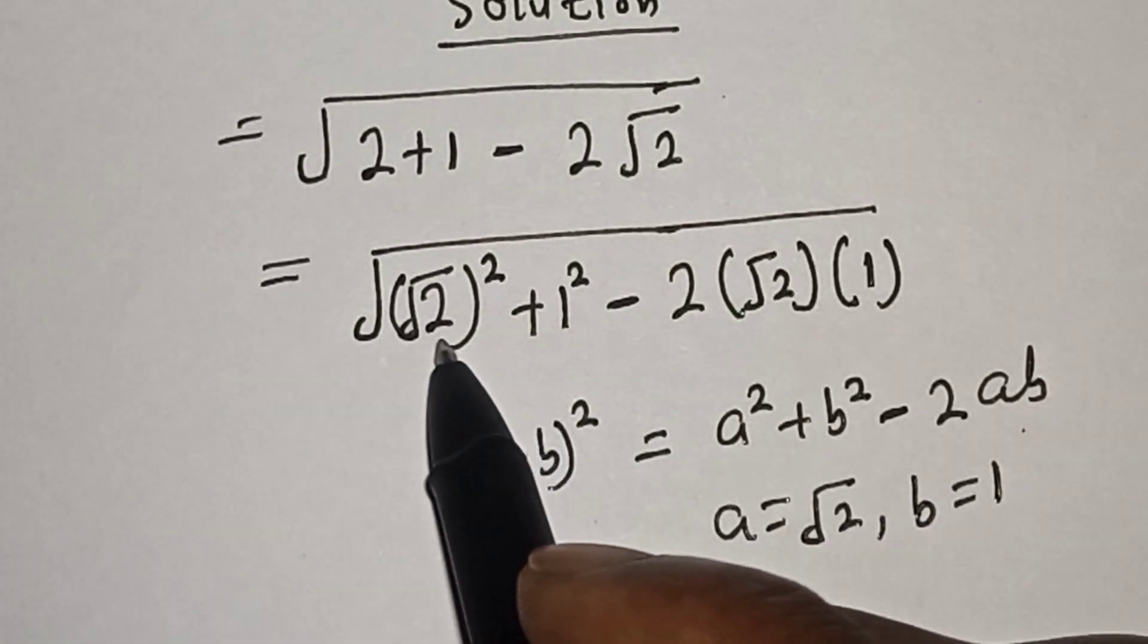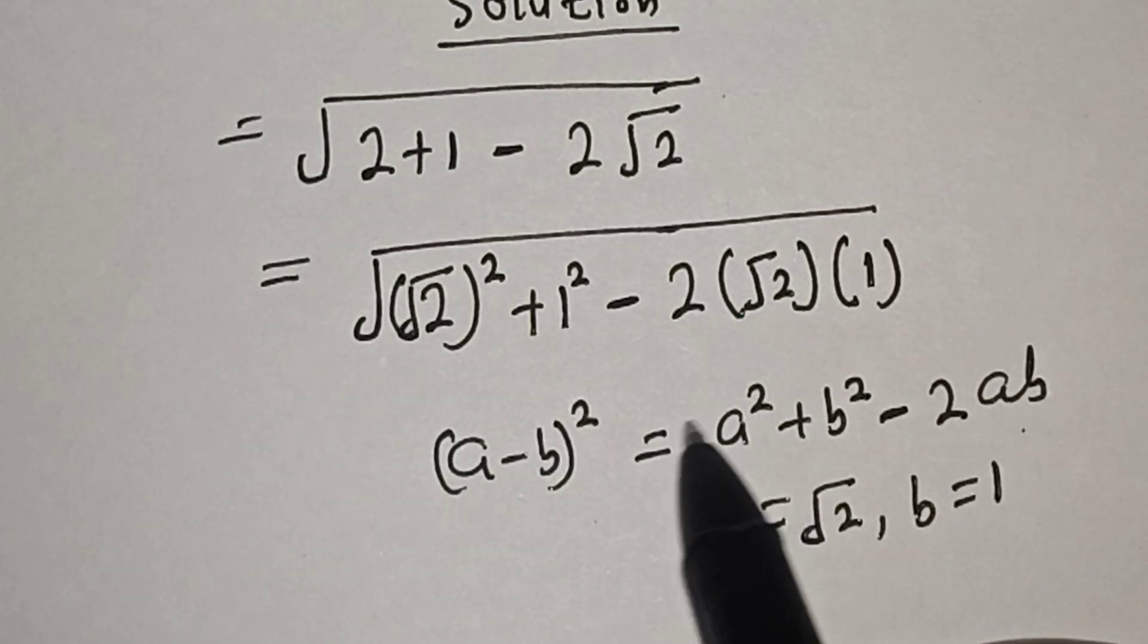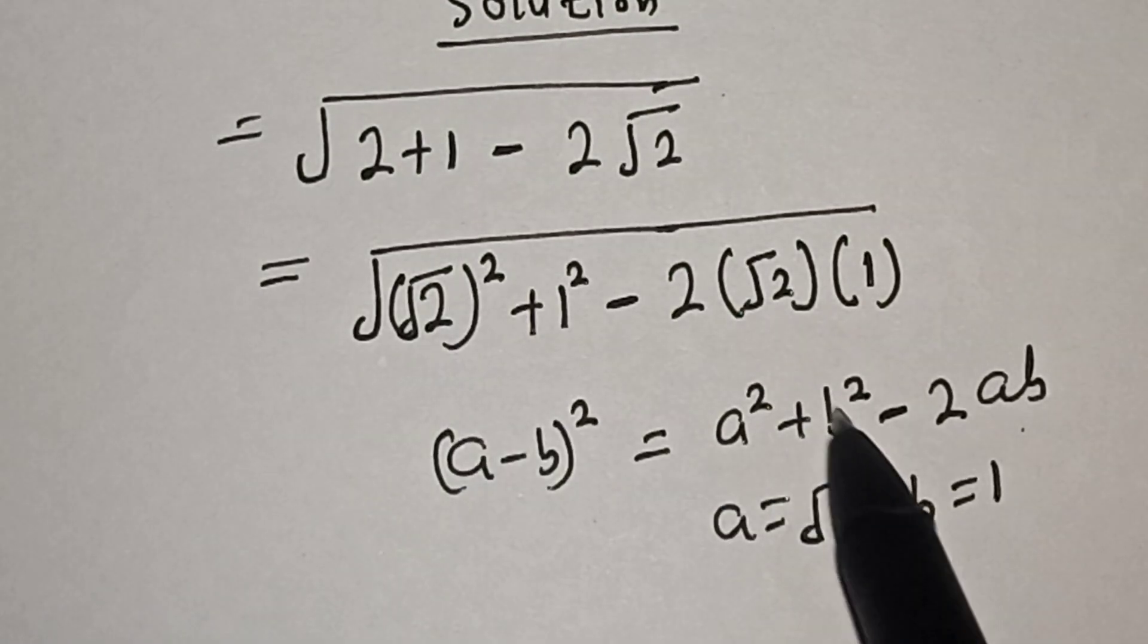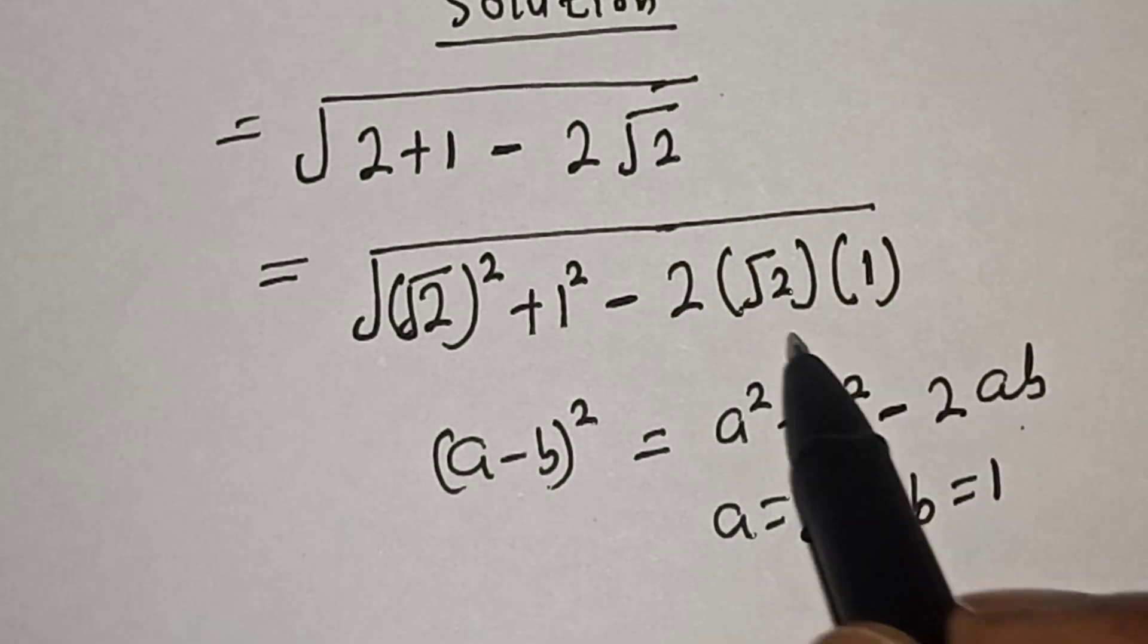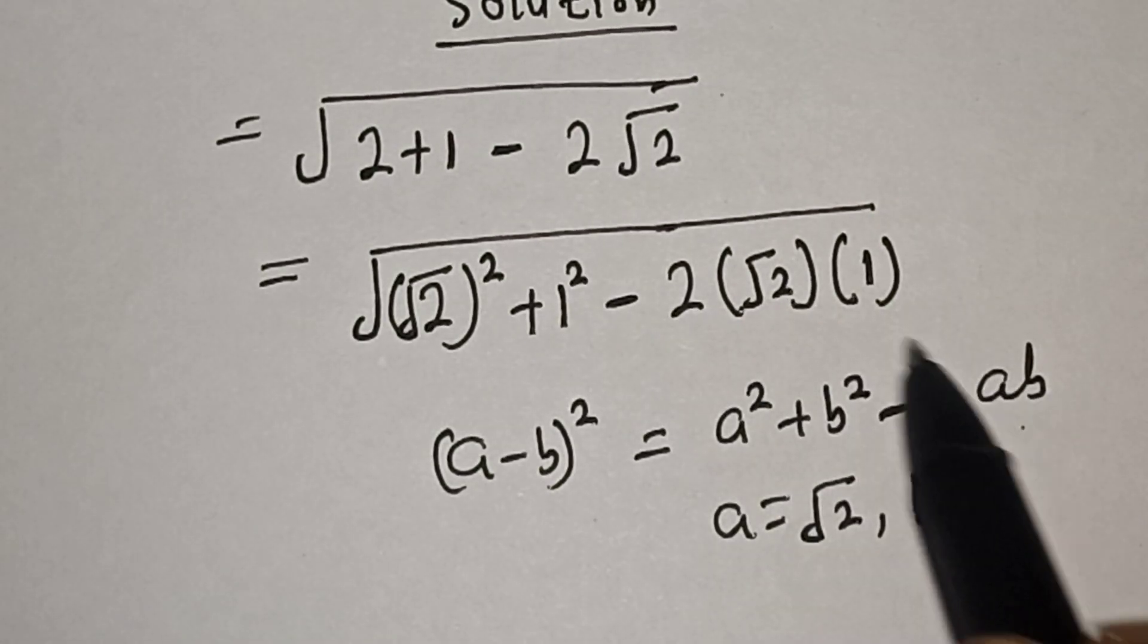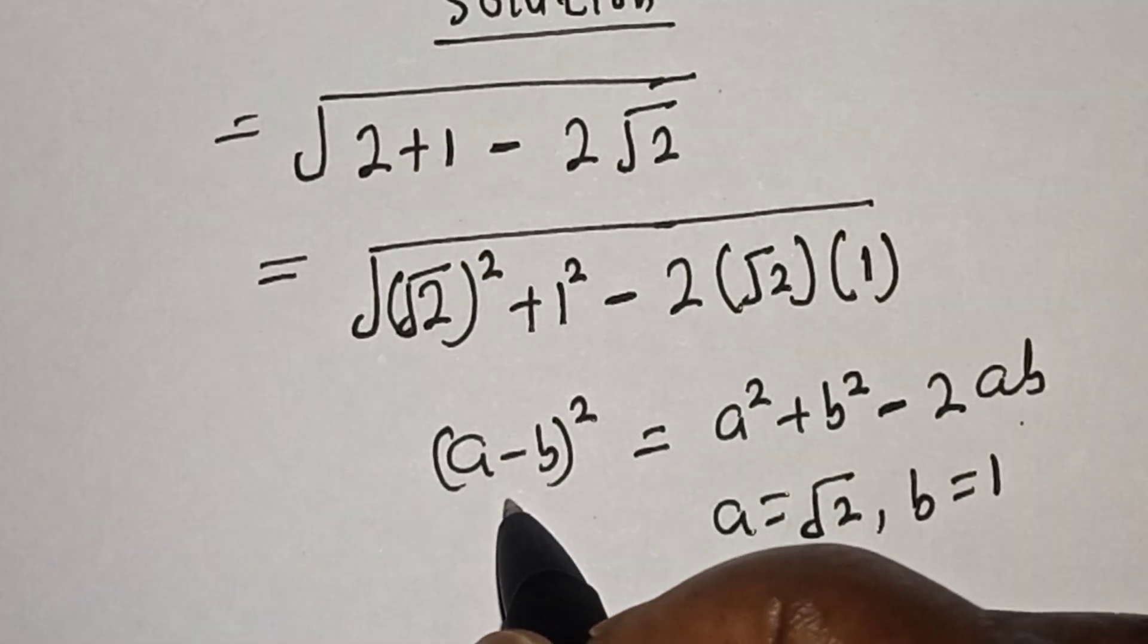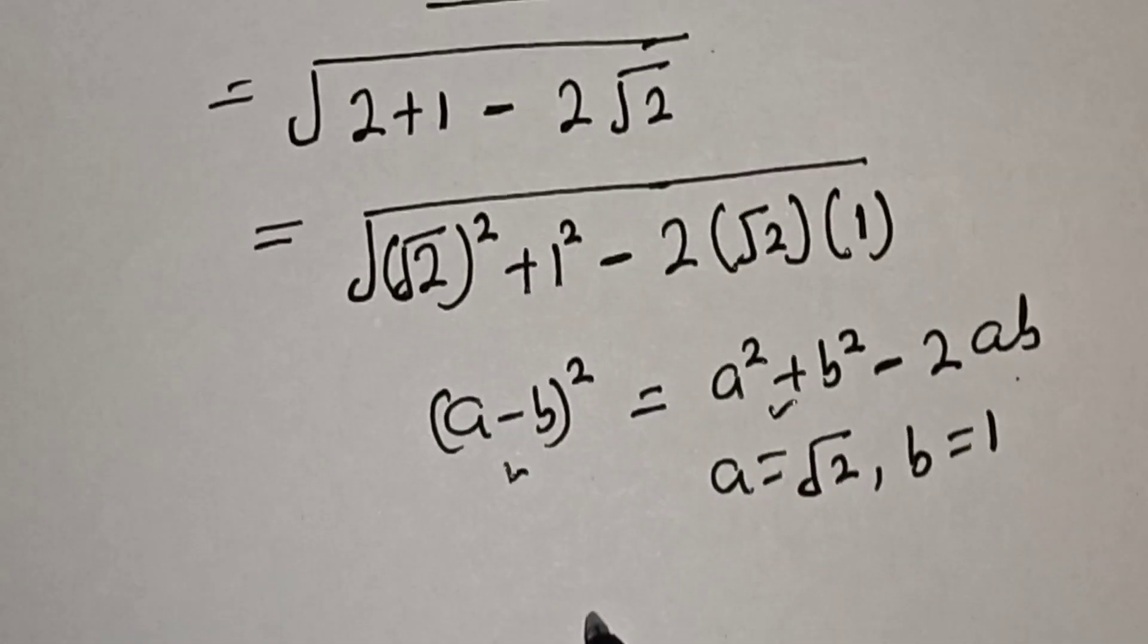Now if you look at this expression, we have a² which is (√2)², and b² which is 1², minus 2 multiplied by √2 multiplied by 1. We can recognize this pattern and substitute.